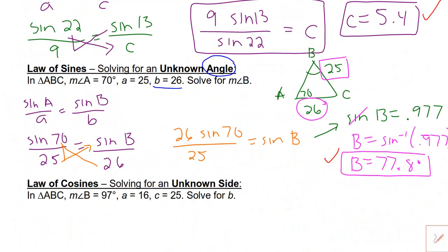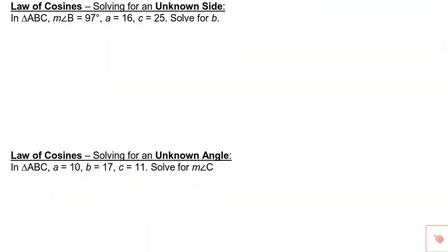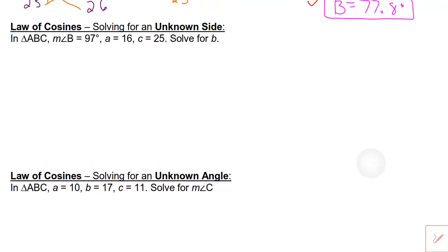Just like with law of sines, let's look at two examples. One case where we're solving for an unknown side, and one case we're solving for an unknown angle. And in both of them, we're going to always start out by drawing the triangle if it's not provided.